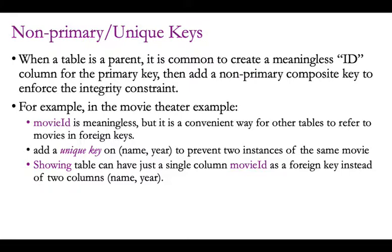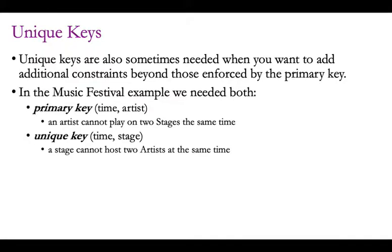Unique keys are another thing we introduced but haven't talked too much about, so let me review that here. These are needed when you want to add additional constraints apart from just those enforced by the primary key. The primary key prevents rows from having duplicate values for those particular columns. But it might be that you have multiple different things you don't want to repeat, in which case you need not just a primary key, but additional unique keys.